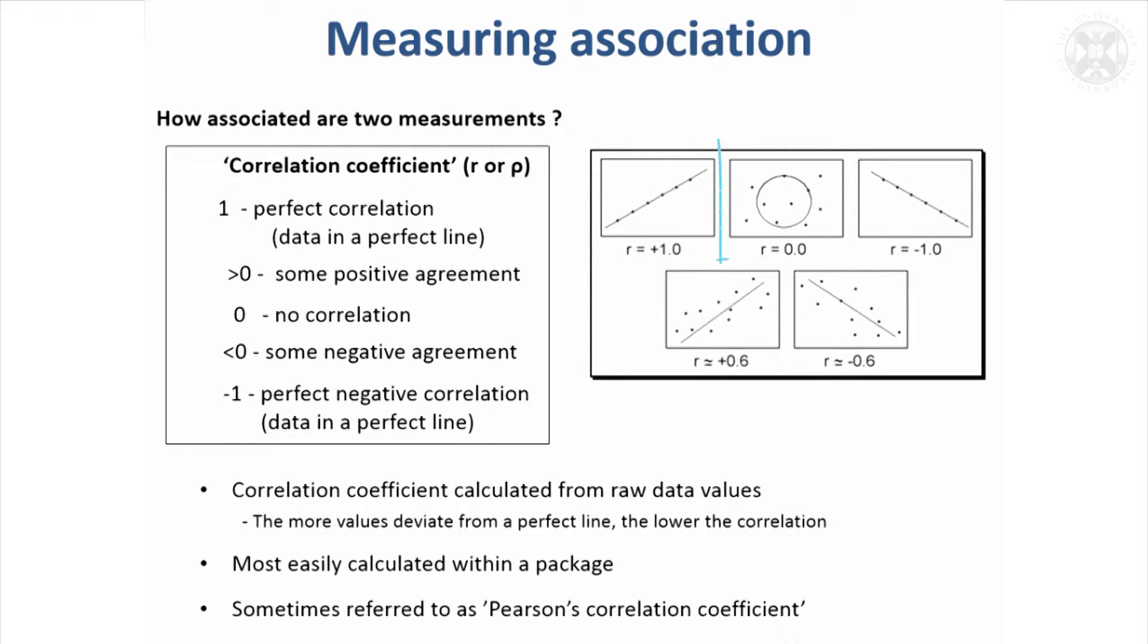If there was absolutely no relationship between them, then correlation would probably be close to zero. If they were on a line but it was sloping downwards, then correlation would be minus one. But usually you're somewhere in between. You're never exactly one, zero, or minus one.